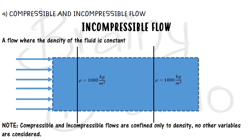So these are the different categories of fluid flows: steady and unsteady, uniform and non-uniform, laminar and turbulent, compressible and incompressible. Apart from these, there are also other types like rotational and irrotational, and one-dimensional, two-dimensional, and three-dimensional flows, which are not discussed in this topic right now. Thank you for watching — please put any suggestions in the comment box.